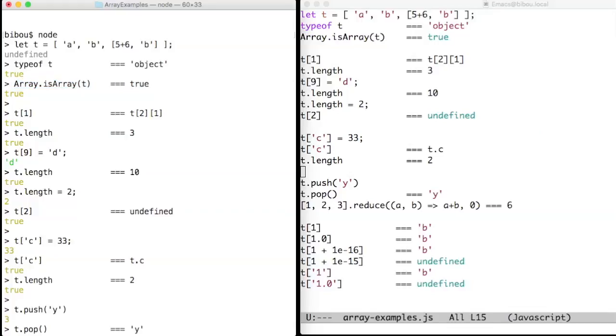Arrays are objects equipped with a specific length property. The length of an array is 1 plus the highest used integer index. Here we write index 9, so the length is 10.